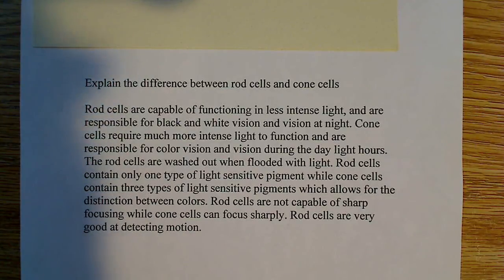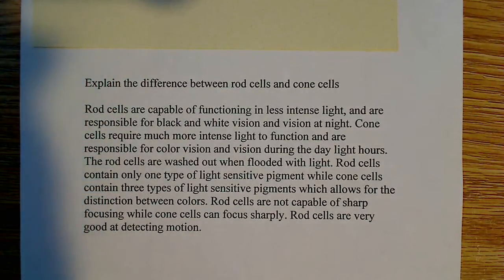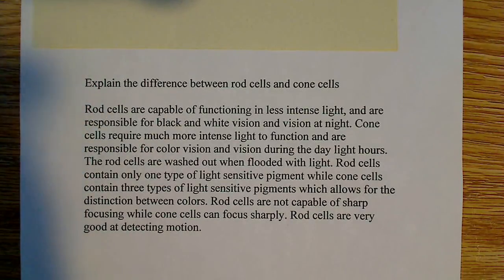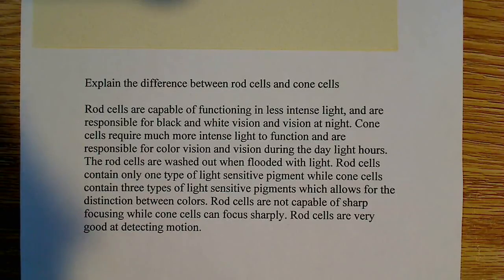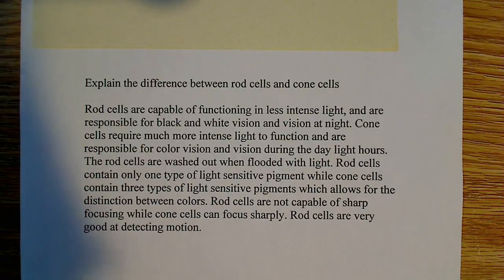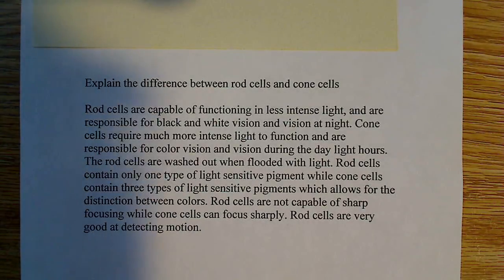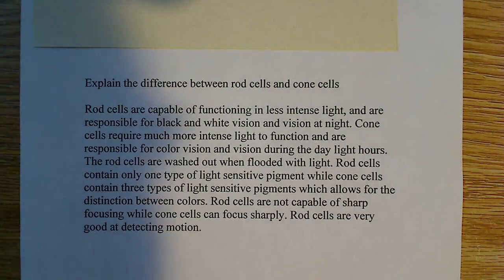Cone cells contain three types of light-sensitive pigments, and that is pretty much the reason why you're able to see color vision. Because you have these three different light-sensitive pigments, it helps you to distinguish between the different colors.